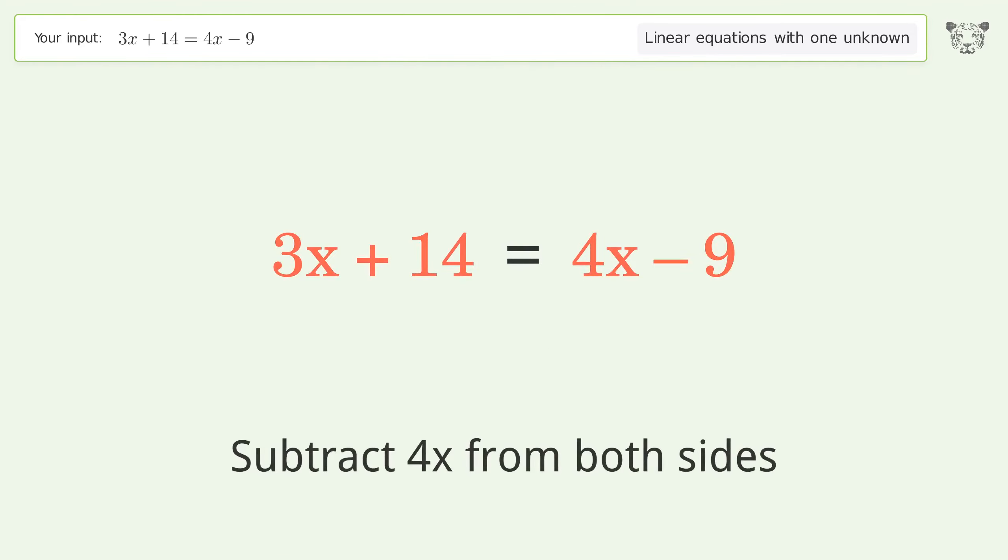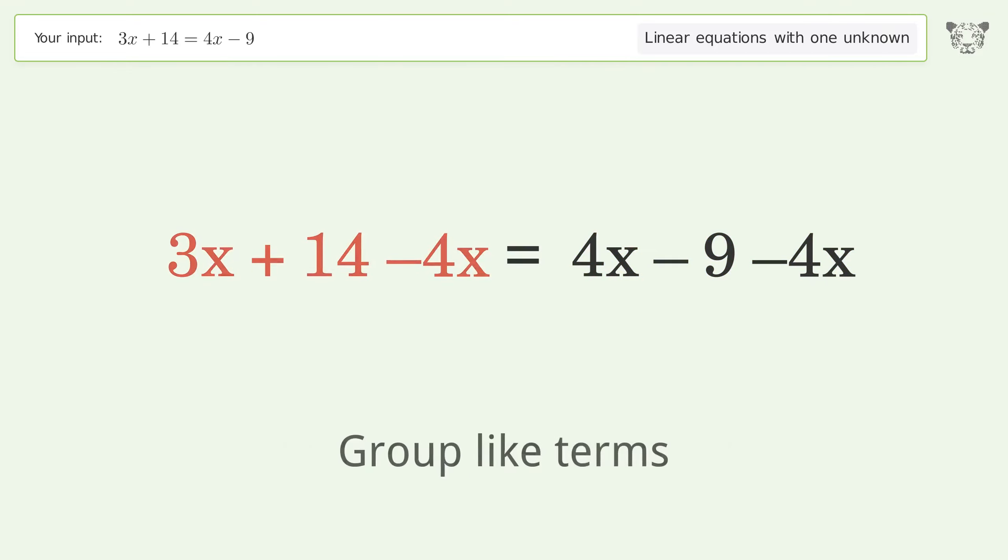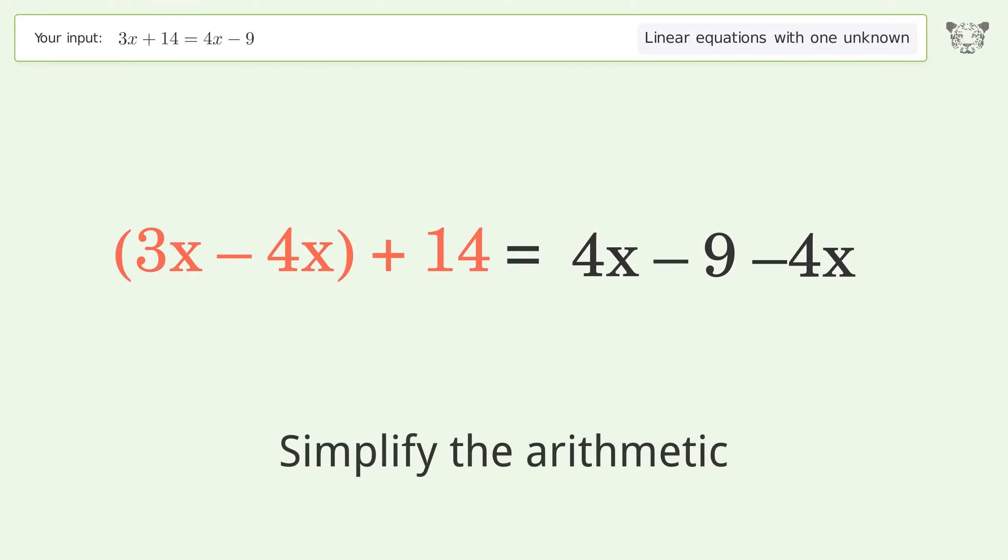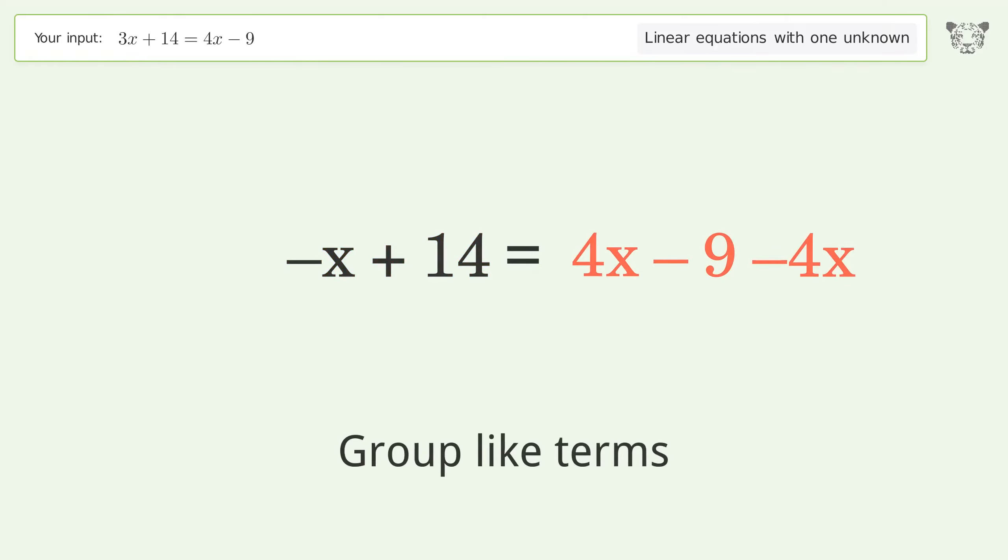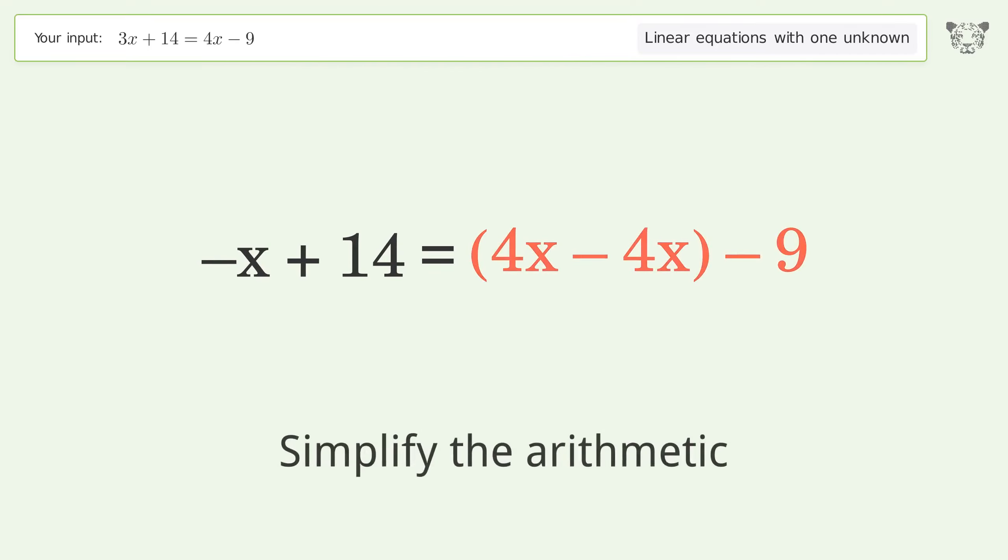Subtract 4x from both sides. Group like terms and simplify the arithmetic.